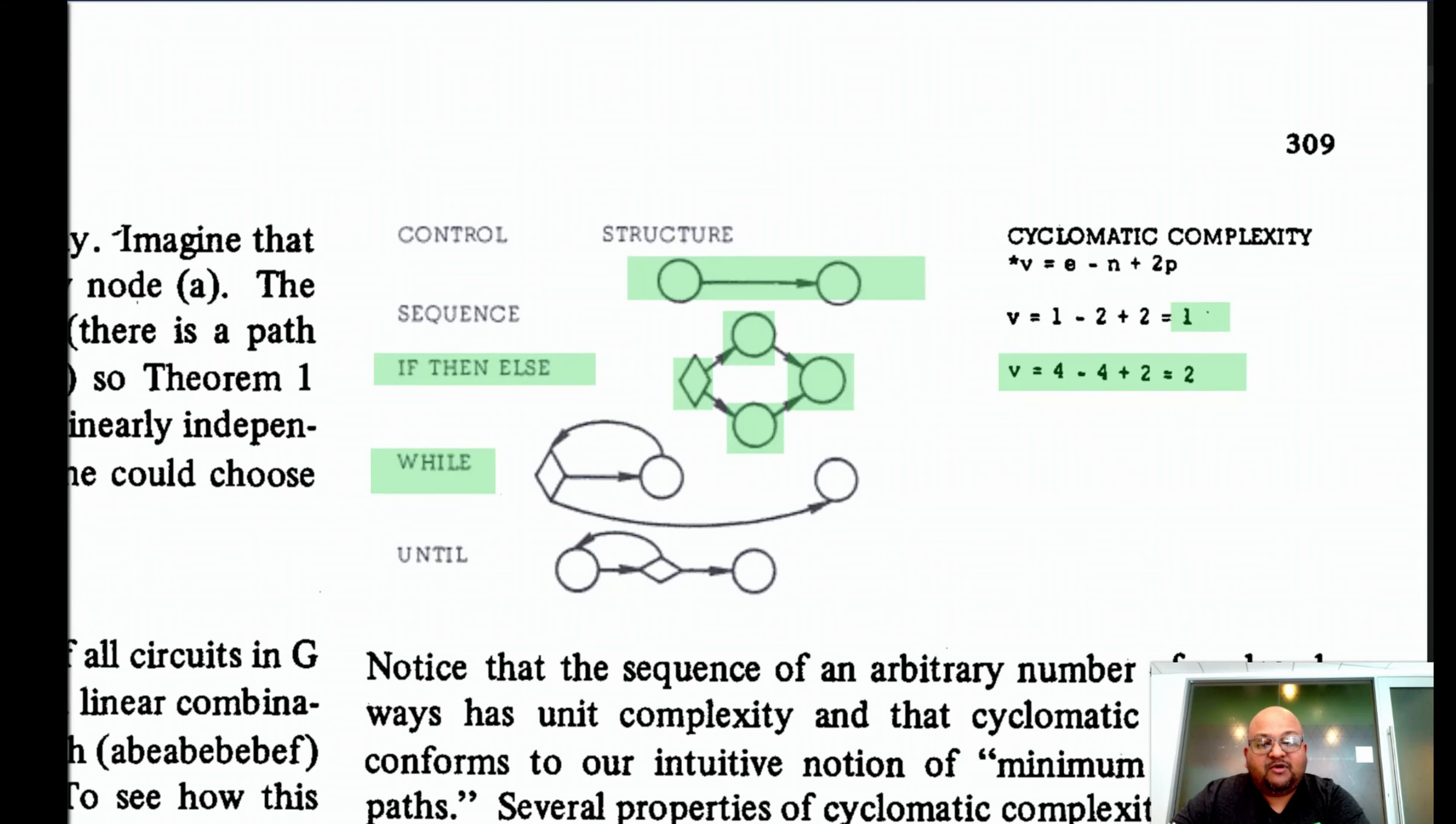Similarly, this is how you model a while loop and an until loop. And the cyclomatic complexity of both of these, we see that they have three edges and three nodes. So that would be three minus three plus two. So the cyclomatic complexity of while and until would both be two.